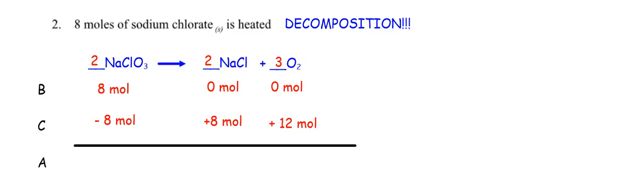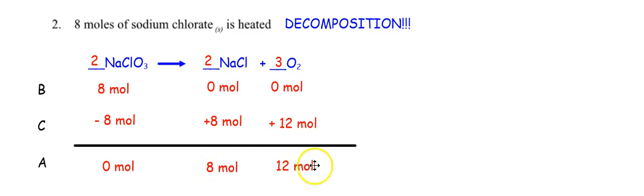Now just do the math. Eight minus eight is zero. Zero plus eight is eight moles of sodium chloride. Zero plus twelve is twelve moles of O₂. So I can ask: how many moles of sodium chloride did I make? Eight. How much oxygen did I make? Twelve. You can ask a whole bunch of questions based on this chart.